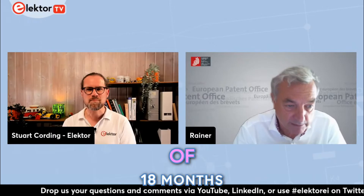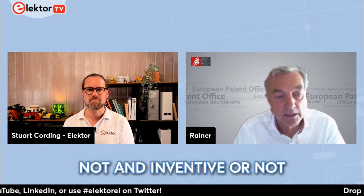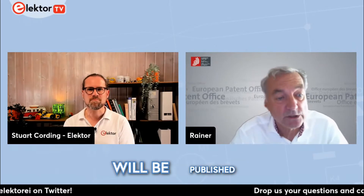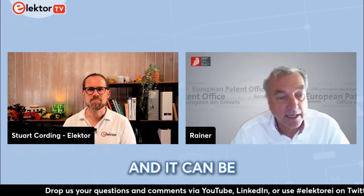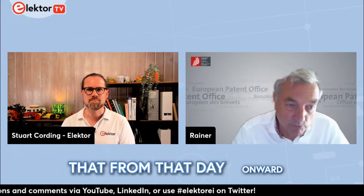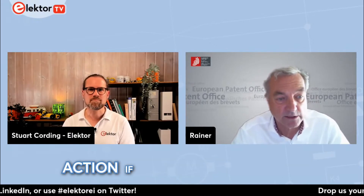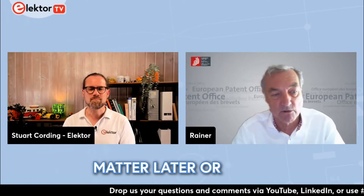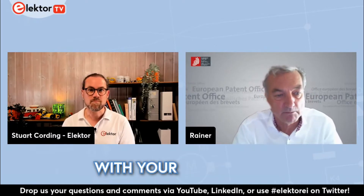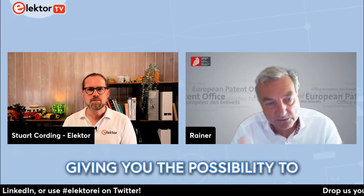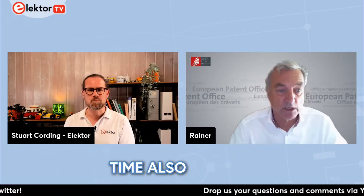After a period of 18 months, your patent application — together with the report on whether it's novel and inventive at first glance — will be published on the website of the EPO or any national patent office and can be inspected by anyone. From that day onward you have the possibility to take legal action if somebody infringes that invention by filing an application for the same subject matter or using it without your permission.